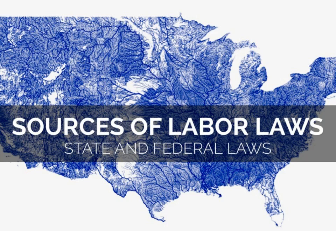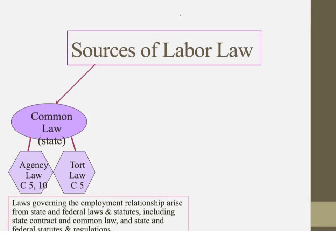There are a variety of sources of labor laws. We've looked at some already, but you can see we have a map of the United States in the background of this slide, and that map is there because the labor laws come from state and federal sources. One of the sources of labor laws is the common law. The common law is only state law — it's not federal law. We've already looked at agency law in chapters 5 and 10, and tort law in chapter 5.